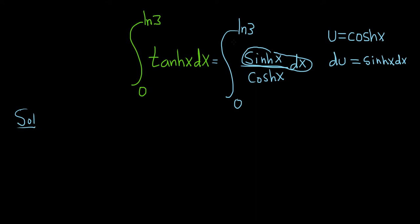Now, this is a definite integral. So we're supposed to change our limits of integration. So let's go ahead and do that very carefully. So when x is equal to 0, we have u equals cosh of 0, which is 1. And if you don't know that it's 1, what you can do is you can use the formula for cosh.